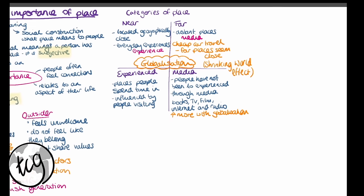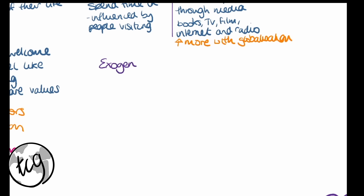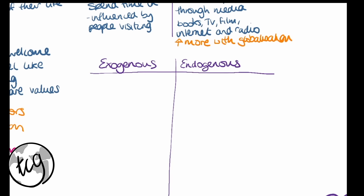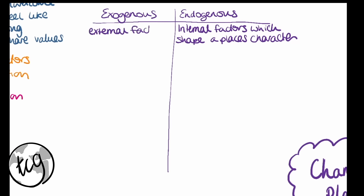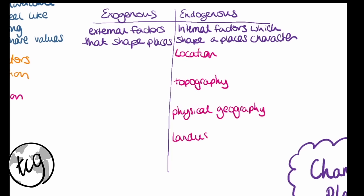Finally in this section, we're going to talk about the factors contributing to the character of places — specifically endogenous and exogenous factors. Endogenous factors are internal factors which shape a place's character. They can be physical such as location, but they can also be human. Exogenous factors are external factors which shape a place through relationships to places or flows. For endogenous factors we have: location, topography, physical geography, land use, built environment, infrastructure, and demographic and economic characteristics — all linked in your specification.